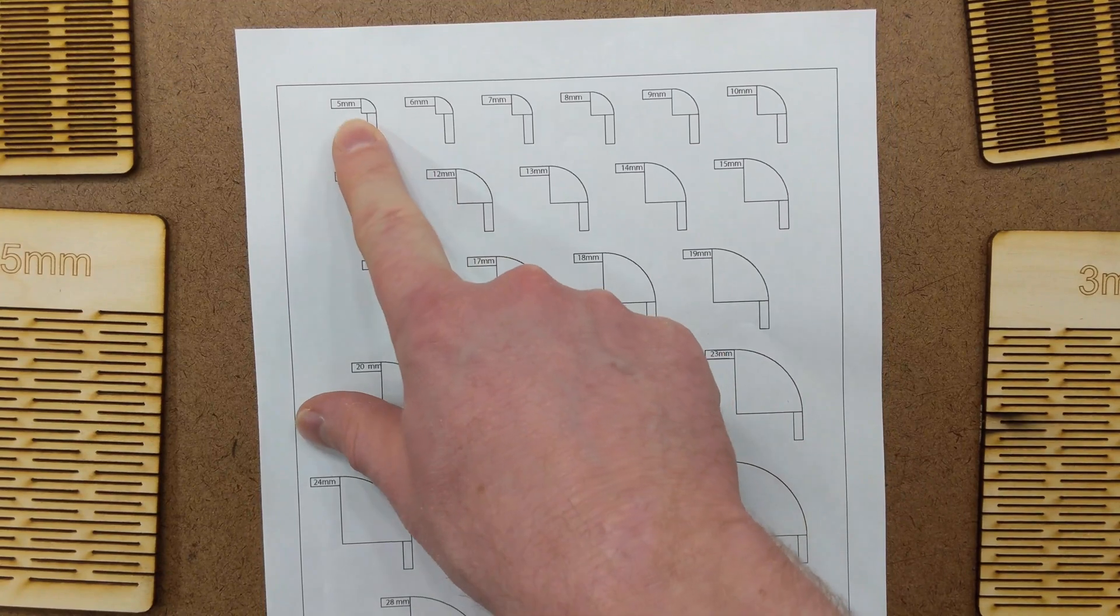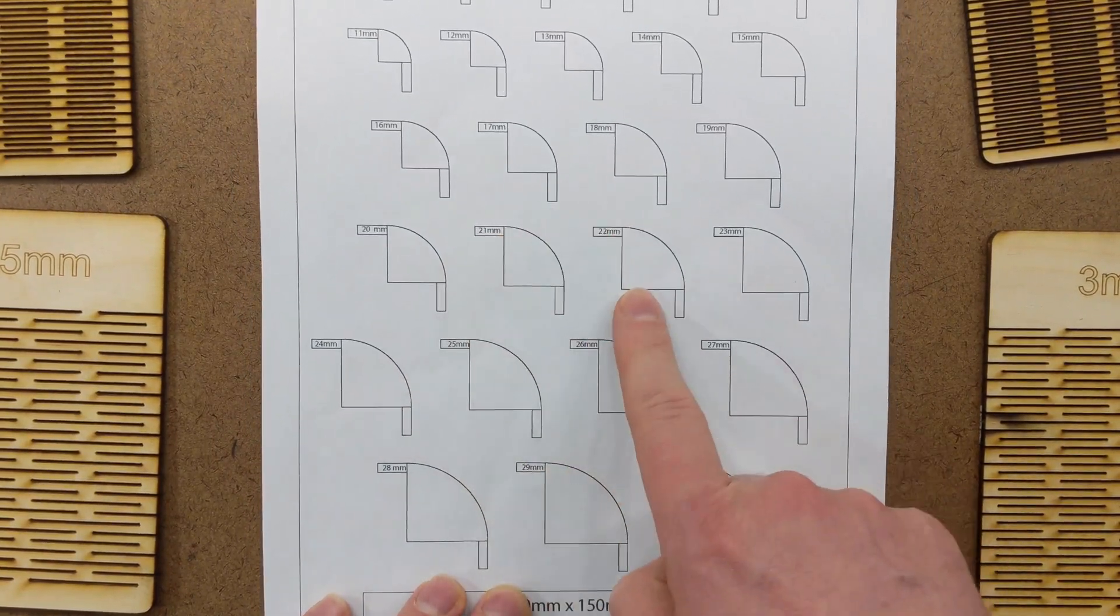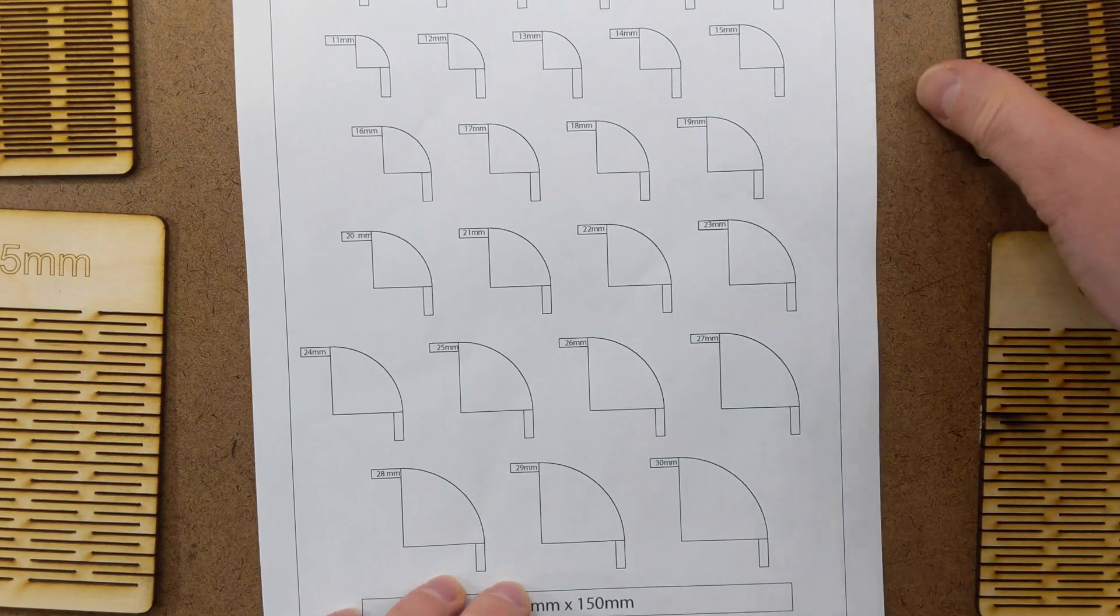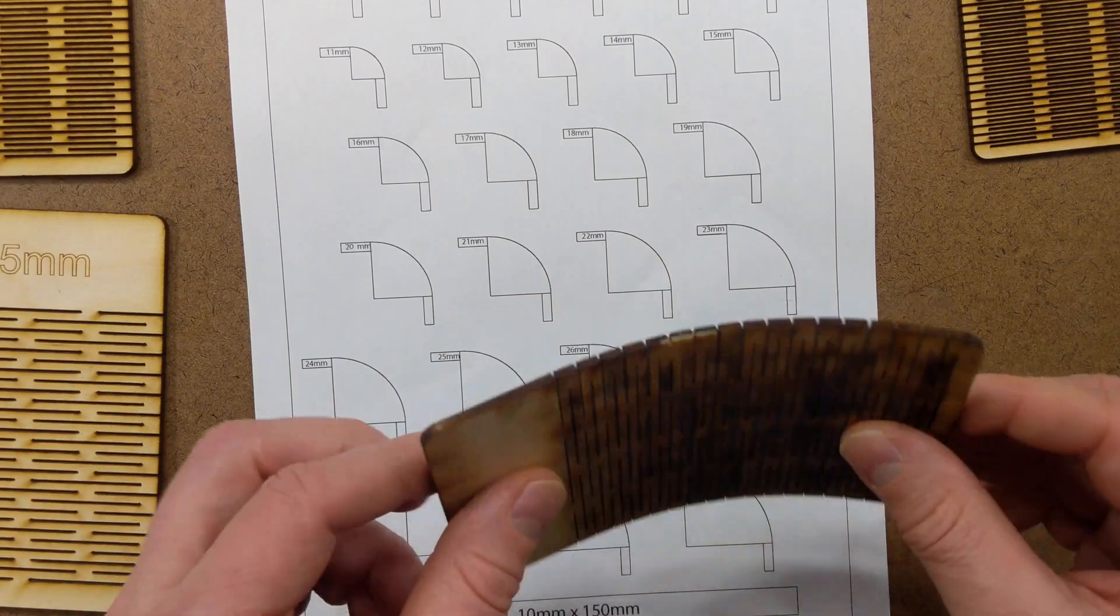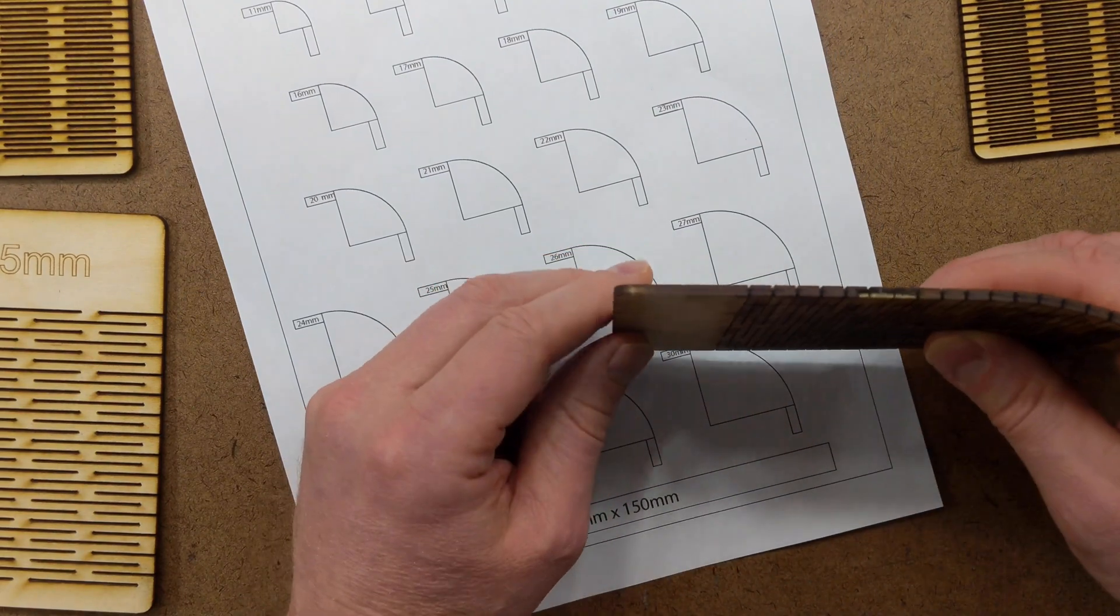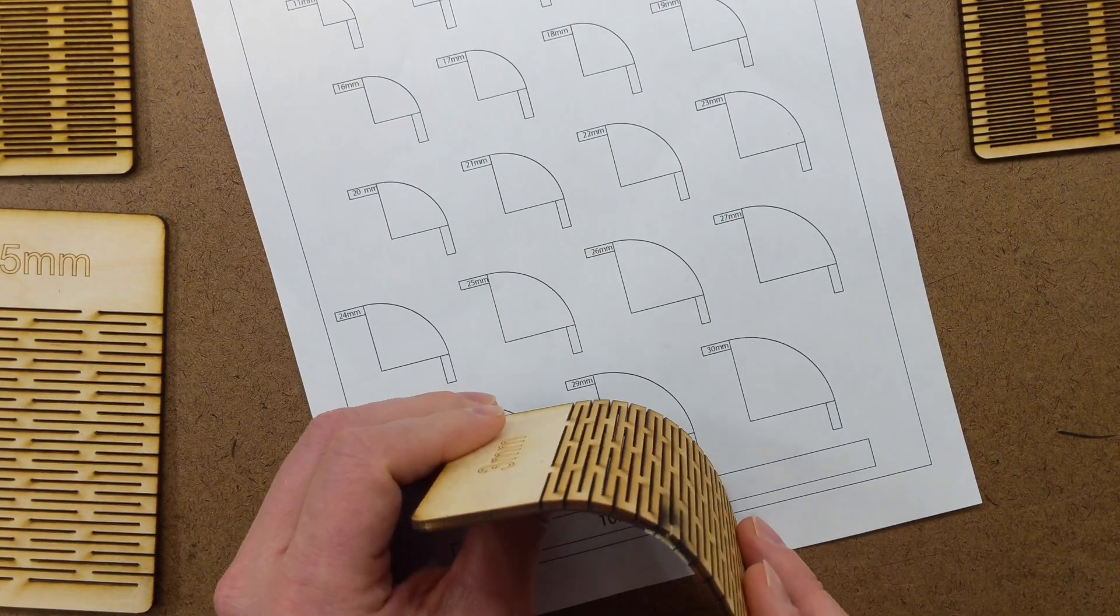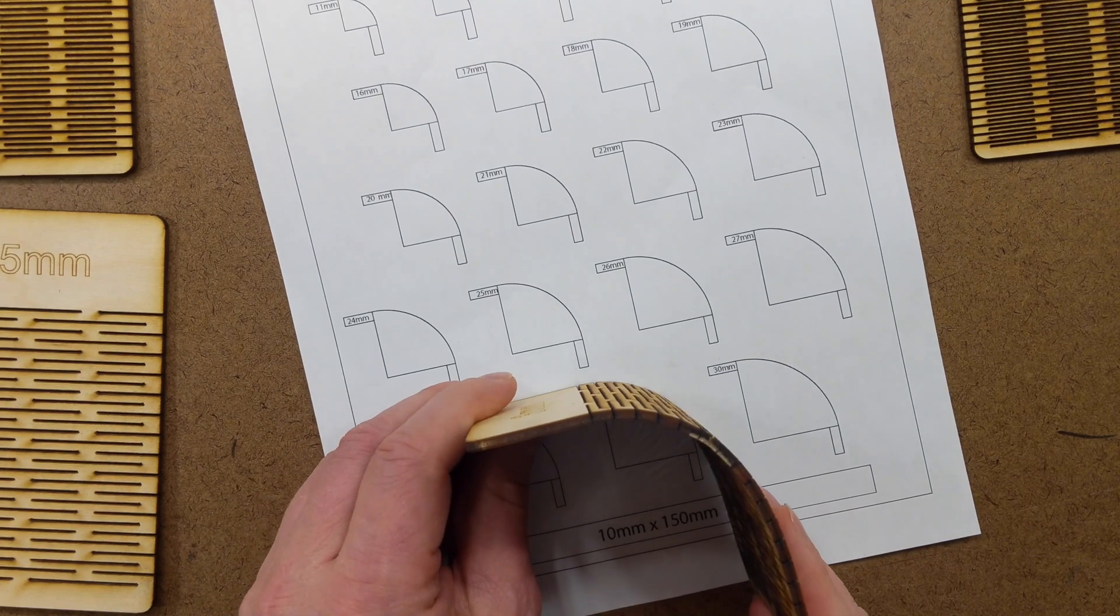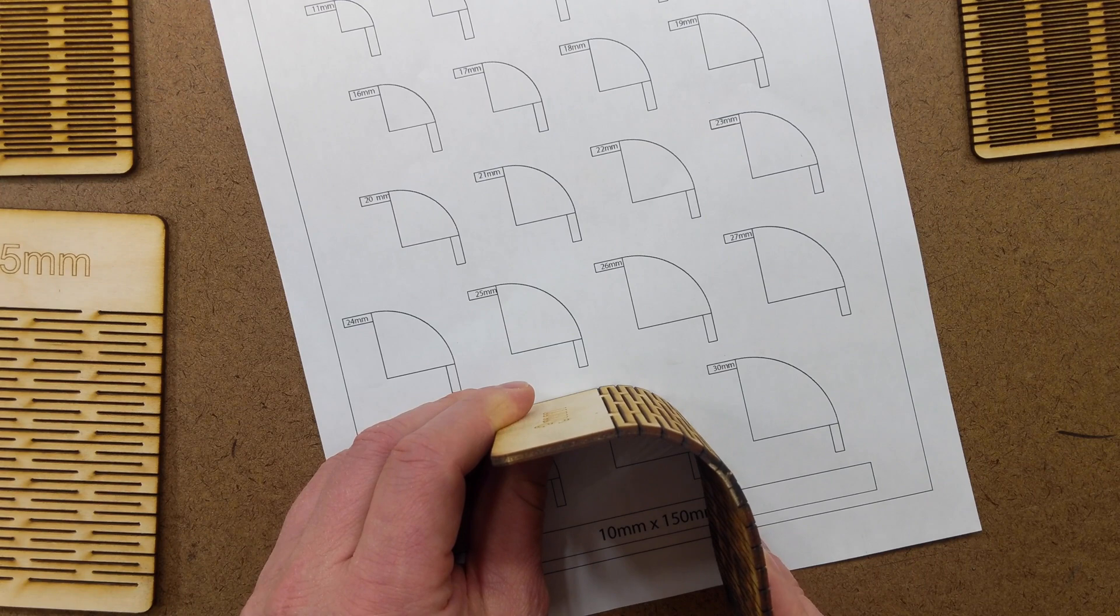Here I've made some radiuses in Fusion and then printed them out so I can test the bend radiuses of these different cut patterns. For example, if I get a 3 millimeter cut pattern and I lay it down on the 30 millimeter radius, it bends all the way 90 degrees. So I could definitely use a 30 millimeter radius in my design. If I move down to 29 millimeters, I can still make that bend. So that is a usable radius in my design.